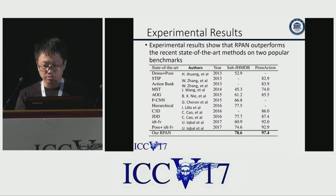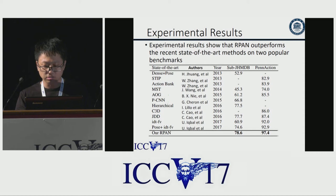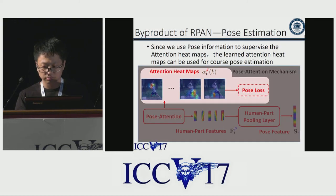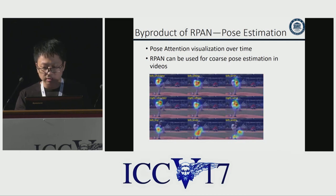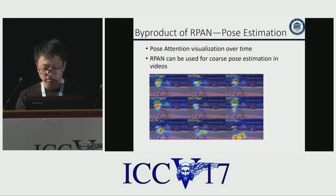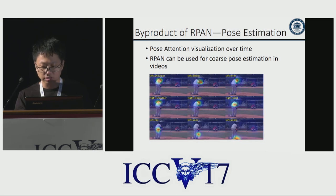We compare our results with recent state-of-the-art methods. As we can tell from the table, our method outperforms other hand-crafted and deep learning approaches on the 2D datasets. Since we use pose information to supervise the attention heat maps, the learned heat maps correspond to human joint locations and can be used for coarse pose estimation. Here we visualize where our pose attention focuses during testing, and as we can tell, the pose attention focuses on the human joint locations.